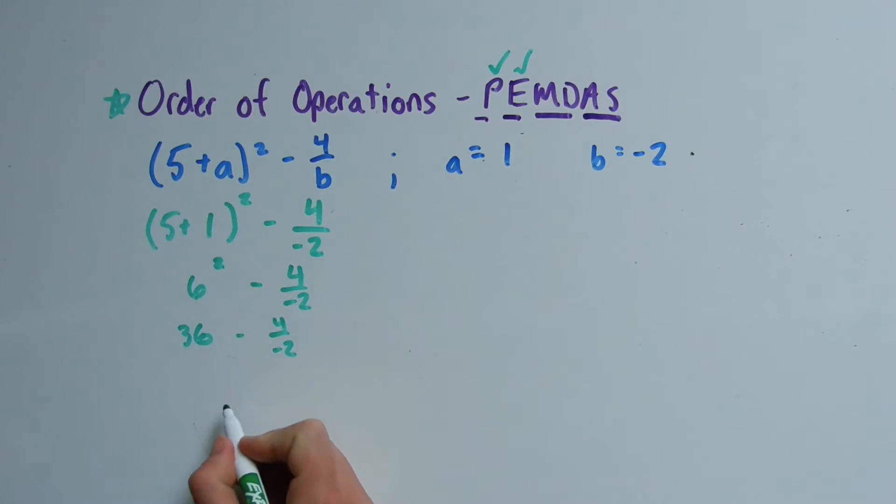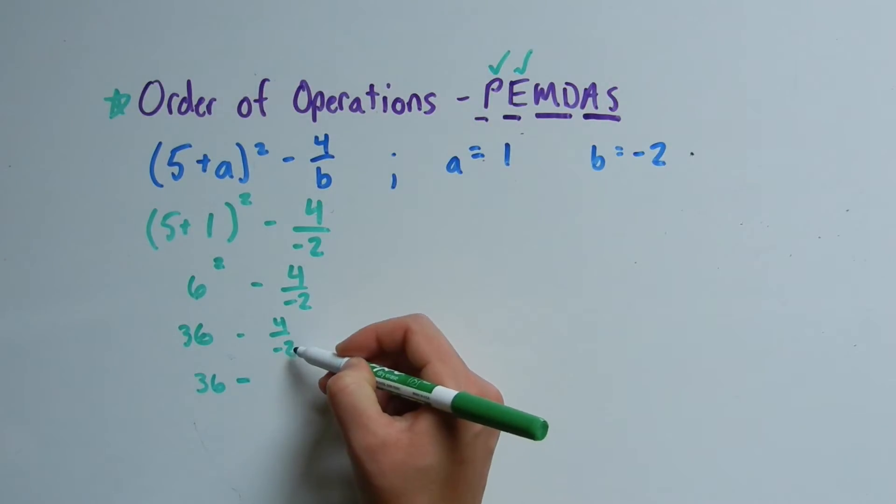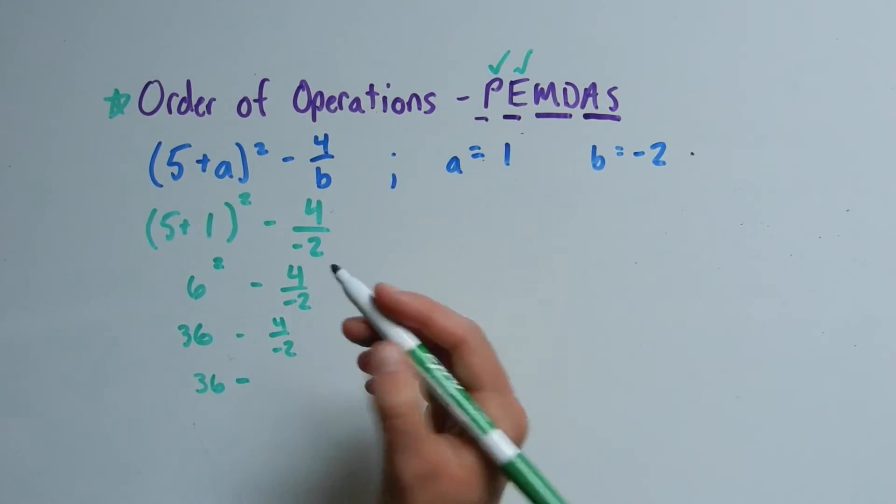This is 4 divided by negative 2, so we're going to evaluate that. So we're going to get 36 minus—4 divided by negative 2 would be negative 2.